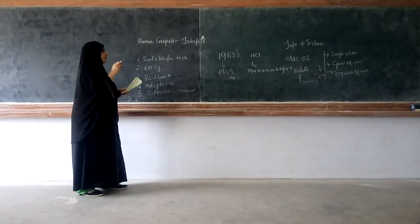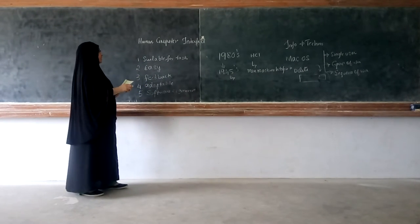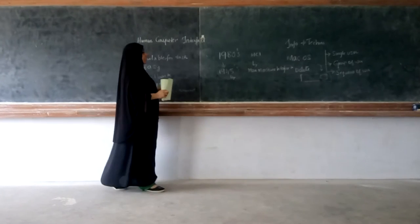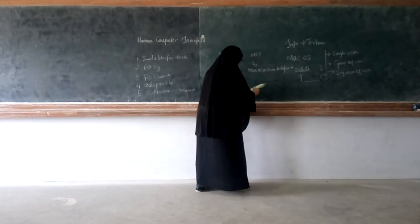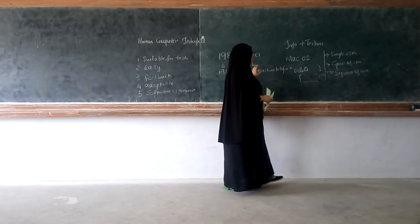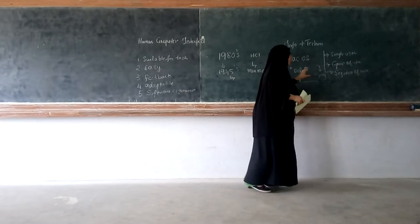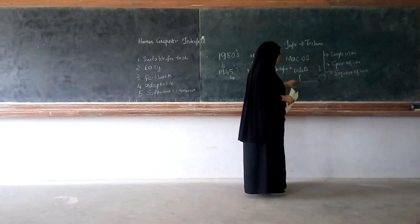Now, here, first of all, we will see what is the correct thing about human-computer interface. Now when I say human, I have told that the human can be a single user, group of users, or sequence of users.